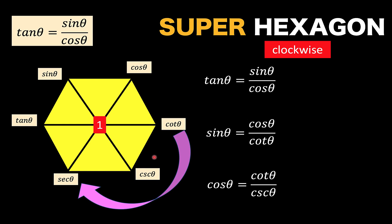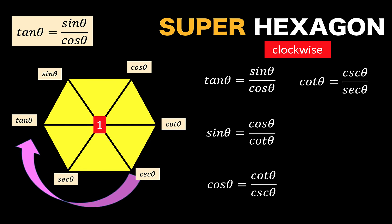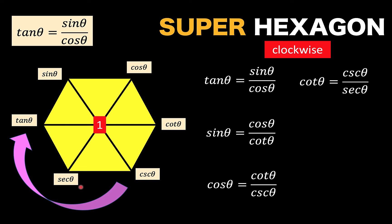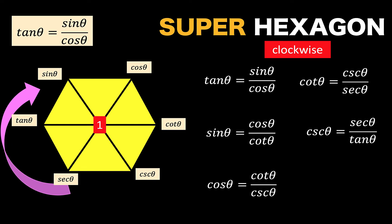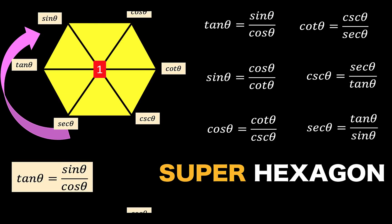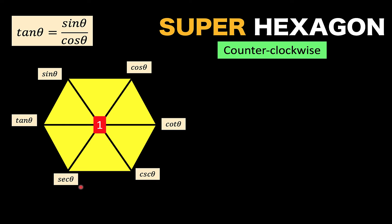Continuing the clockwise rotation: cotangent equals cosecant over secant, cosecant equals secant over tangent, and secant equals tangent over sine. We have just generated six trigonometric identities from the super hexagon without memorizing them at all.